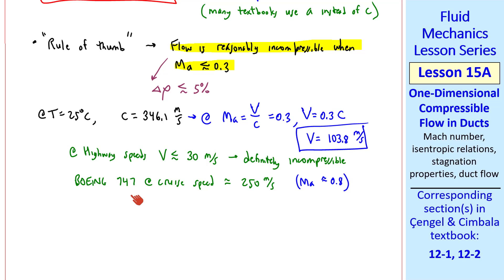Compare that to a Boeing 747, which cruises at about 250 meters per second. The Mach number is about 0.8, so engineers have to take compressibility into account. A small plane like a Piper Cub cruises at only about 45 meters per second, so the Mach number is well below 0.3 and flow can be considered incompressible.